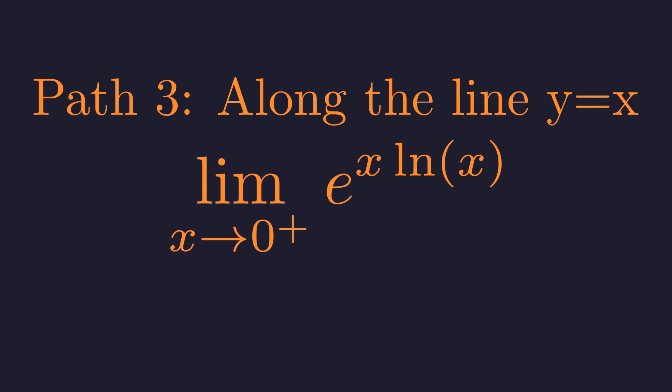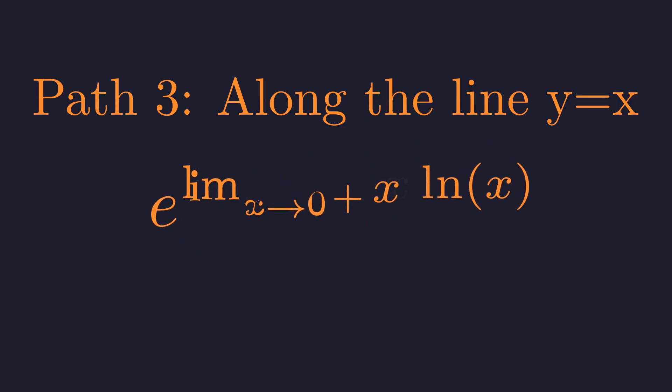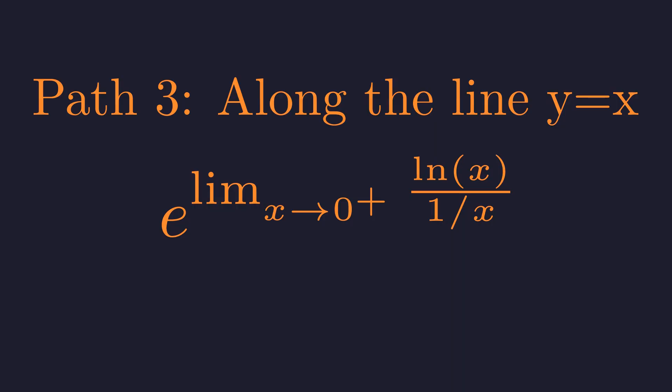Because the exponential function is continuous, we can move the limit inside the exponent. Our problem now is to find the limit of x times the natural log of x as x approaches zero. This is a zero times negative infinity form. We must rearrange it to apply L'Hôpital's rule. We rewrite it as the natural log of x divided by 1 over x. This is now an indeterminate form where both numerator and denominator approach infinity in magnitude.